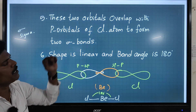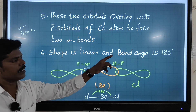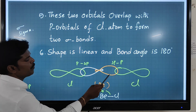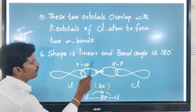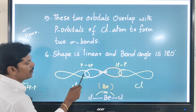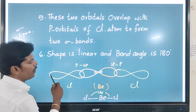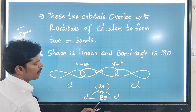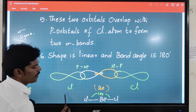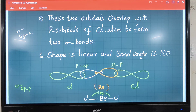These two sp hybrid orbitals overlap with the p orbitals of the chlorine atoms to form two sigma bonds. The shape is linear and the bond angle is 180 degrees for beryllium chloride. The sp hybrid orbitals from beryllium form sp–p overlap bonds with the p orbitals of the two chlorine atoms. This is the orbital representation — Be–Cl sigma bond — and beryllium forms one sigma bond with each chlorine atom.